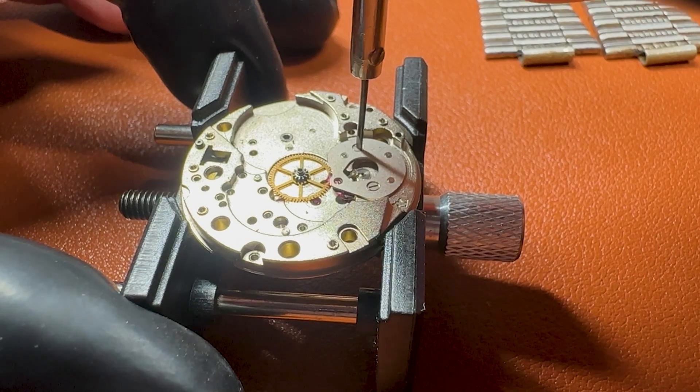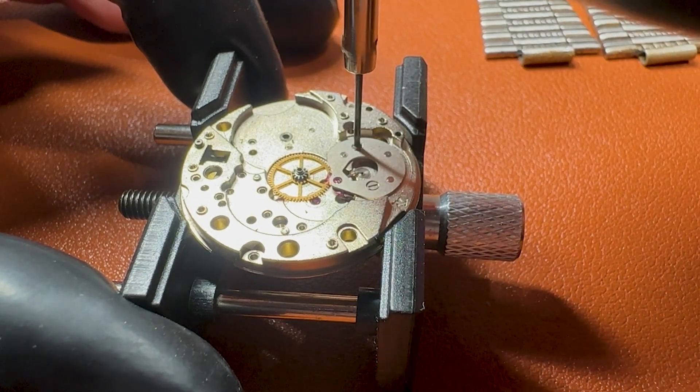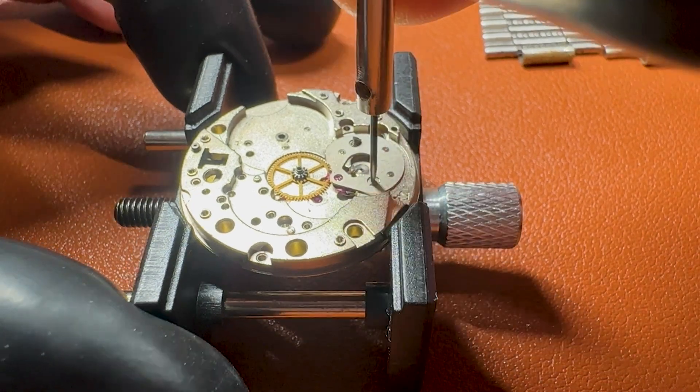Now let's remove the cock and the pallet fork and proceed to the front of the watch.